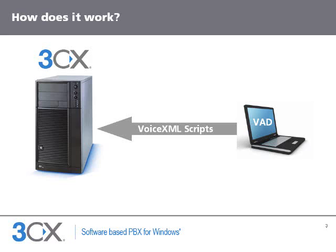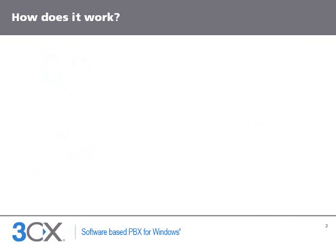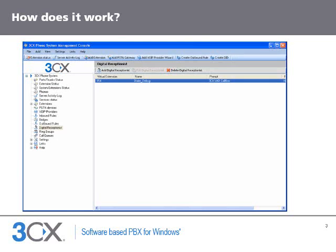You can develop it on any machine that meets the system requirements and then upload it to a 3CX phone system install. Using a digital receptionist or a DID number, you can then link to your voice application. In that way, callers can be directed to your application either directly by calling the DID or using a menu. From within voice applications, you can link back to call queues, extensions, digital receptionists and so on.